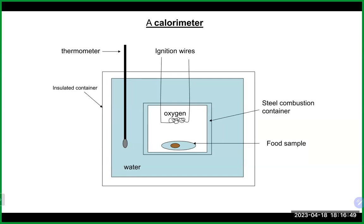A bomb calorimeter sets the food sample on fire inside an oxygen-filled, isolated chamber with a thermometer to measure the temperature change of the surrounding water. You ignite the food, it heats the water, and you do the same specific heat calculation to figure out the nutritional calories in the food. Years ago, experiments used a peanut or Cheeto under a soda can with water to demonstrate this.